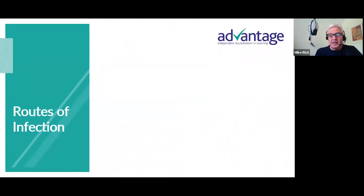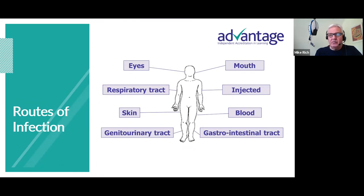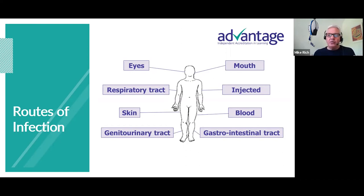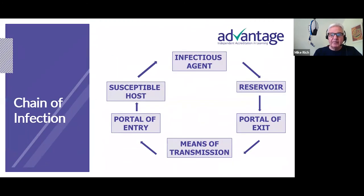Routes of infection include the eyes (conjunctivitis), the mouth, the respiratory tract — especially relevant with COVID-19 — the blood (through intravenous drug use or contaminated transfusions), the gastrointestinal tract (stomach), the urinary tract, and the skin. There's a wide range of entry routes open to viruses and bacteria, and we need to take steps to prevent and control them.